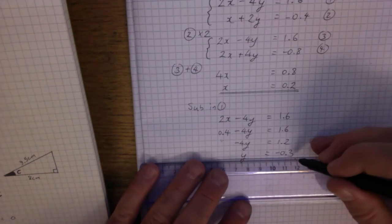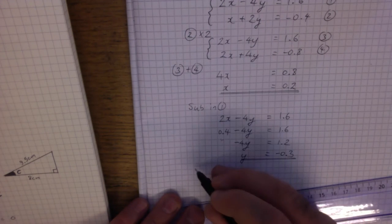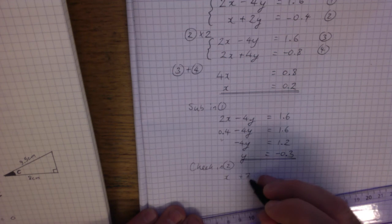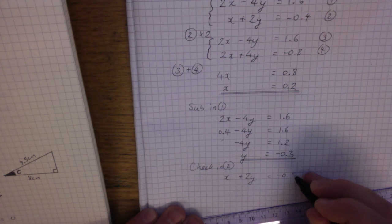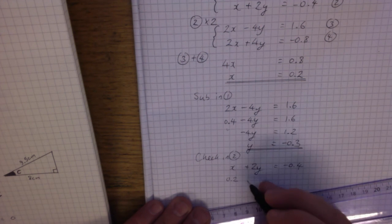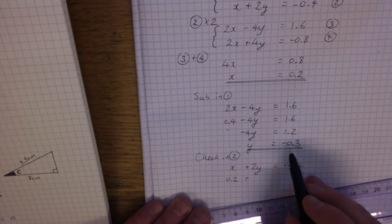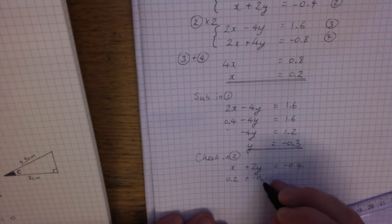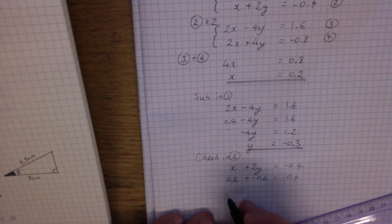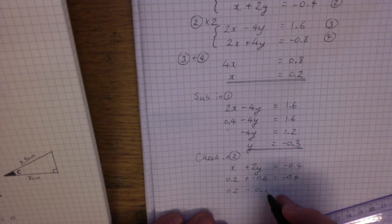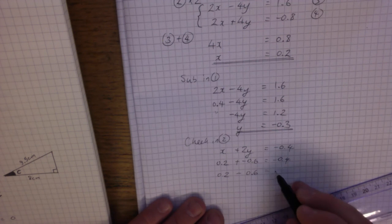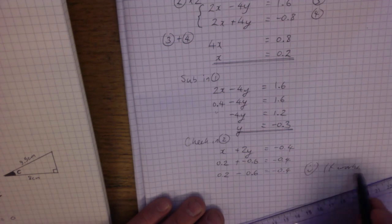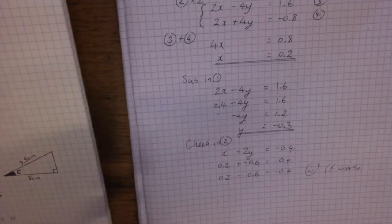Those are slightly unusual answers, so I'll check them in equation 2: x plus 2y equals minus 0.4. With x equals 0.2 and y equals minus 0.3, 2y is minus 0.6. So 0.2 plus minus 0.6 equals minus 0.4 — which is correct. That wasn't any different in structure from the first example; it's just that the numbers were trickier with decimals and negatives.